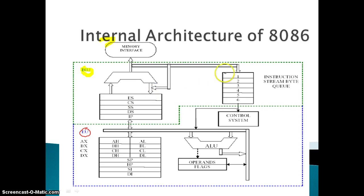The BIU also contains the queue, which stores six bytes. In the 8088, which is another version of the 8086, there are a few differences: the 8086 has a 6-byte queue while the 8088 has a 4-byte queue. The 8086 supports both 16-bit and 8-bit data processing, but the 8088 supports only 8-bit data processing.